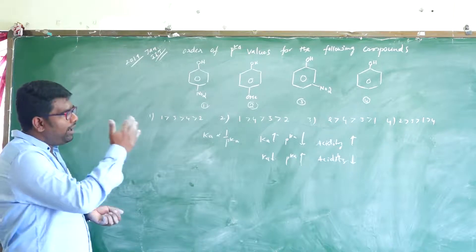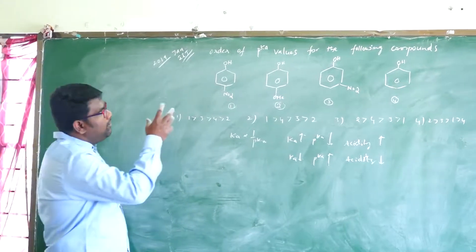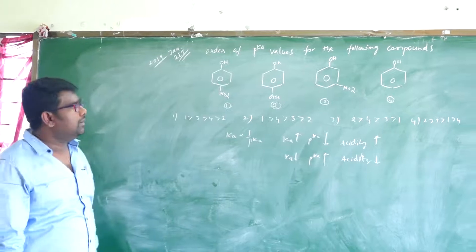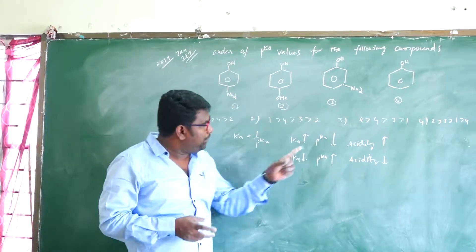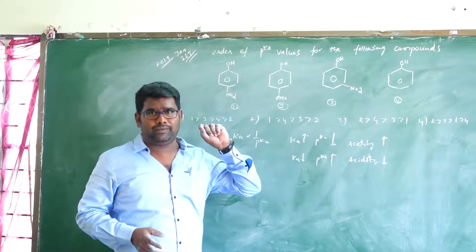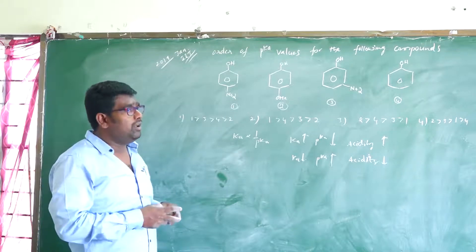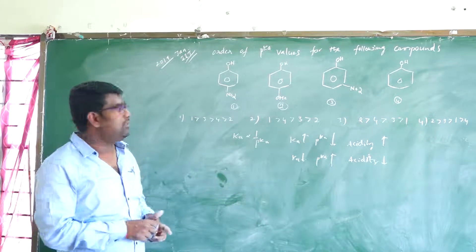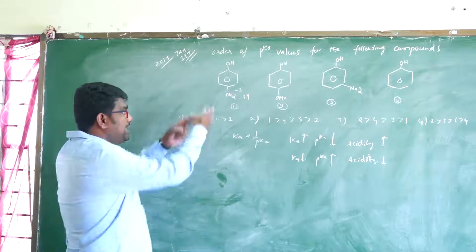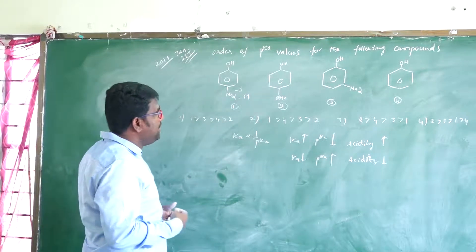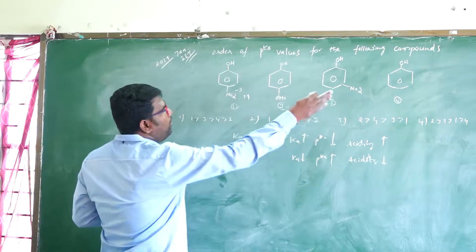Decreasing order means from higher value to lower value. Out of four compounds, which one has the higher PKA value? Higher PKA value means lower acidity. So we need to predict which one has the least acidity among the four — that one will have the highest PKA value. Here, negative inductive effect (-I) and negative mesomeric effect (-M) together dominate, giving maximum acidity, which means the least PKA value.